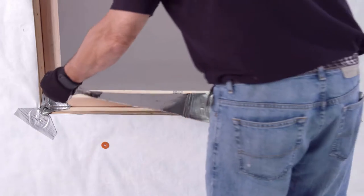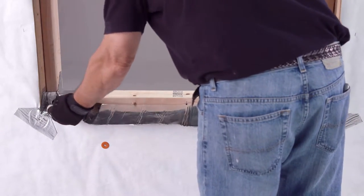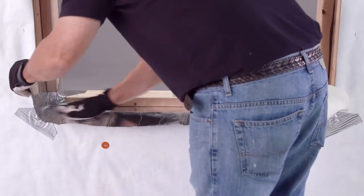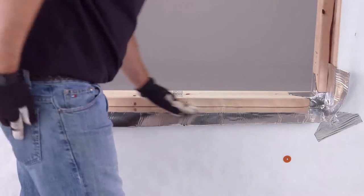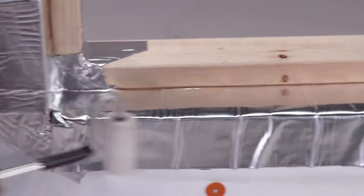Next, center the primary sill flashing into the rough opening and onto the rough sill and extend it up each side jam at least six inches. Then make relief cuts in the corners and fold the flashing onto the WRB. Use the J-roller to remove any air pockets.